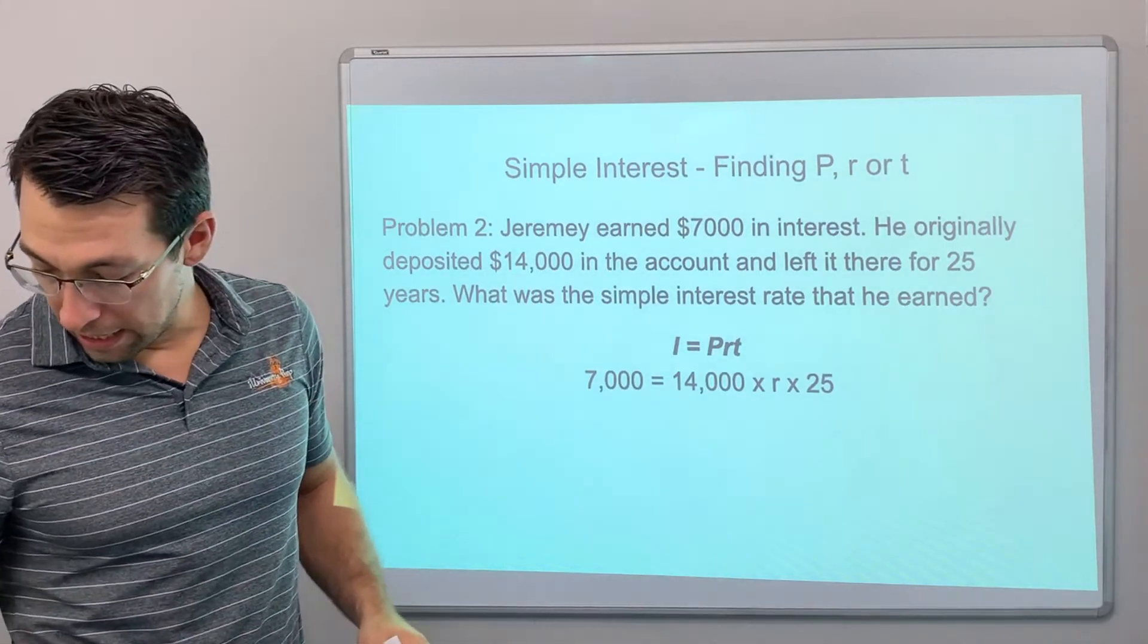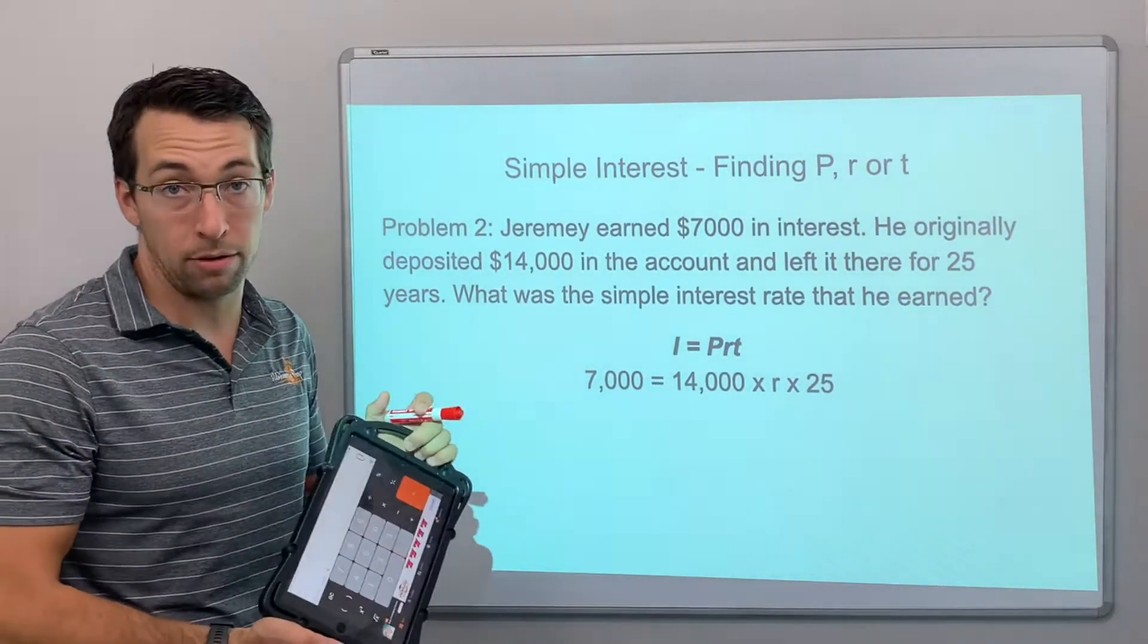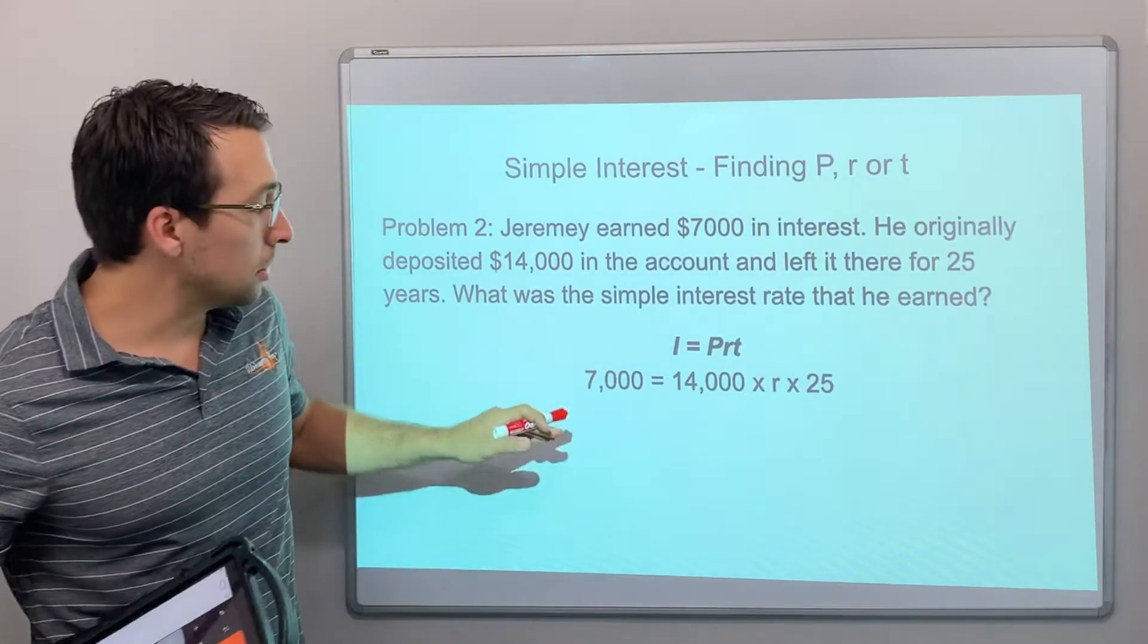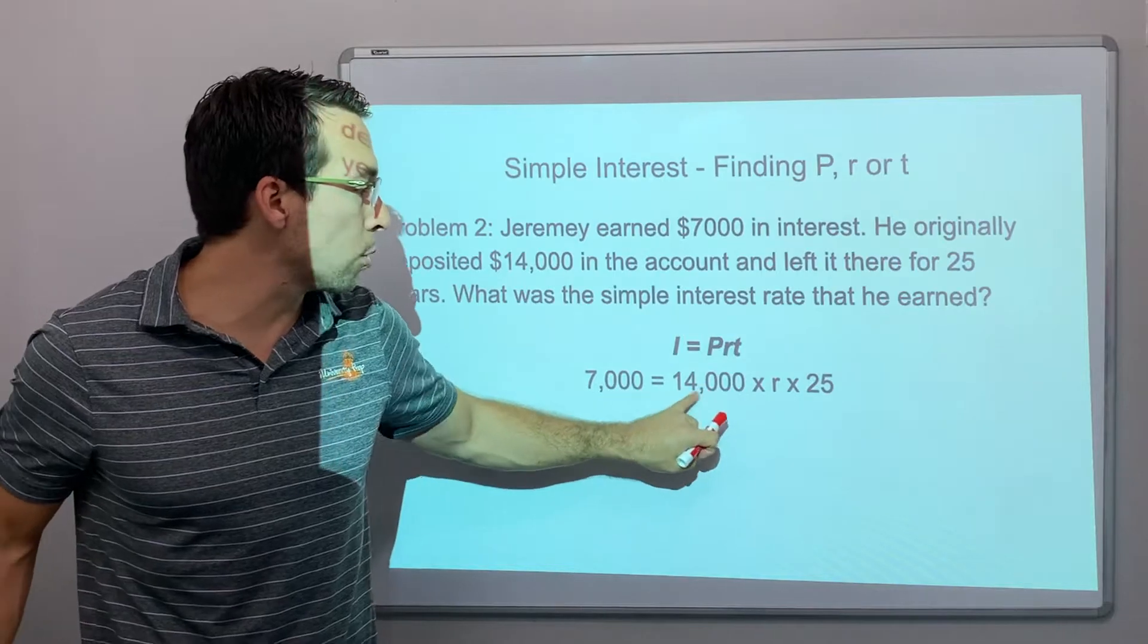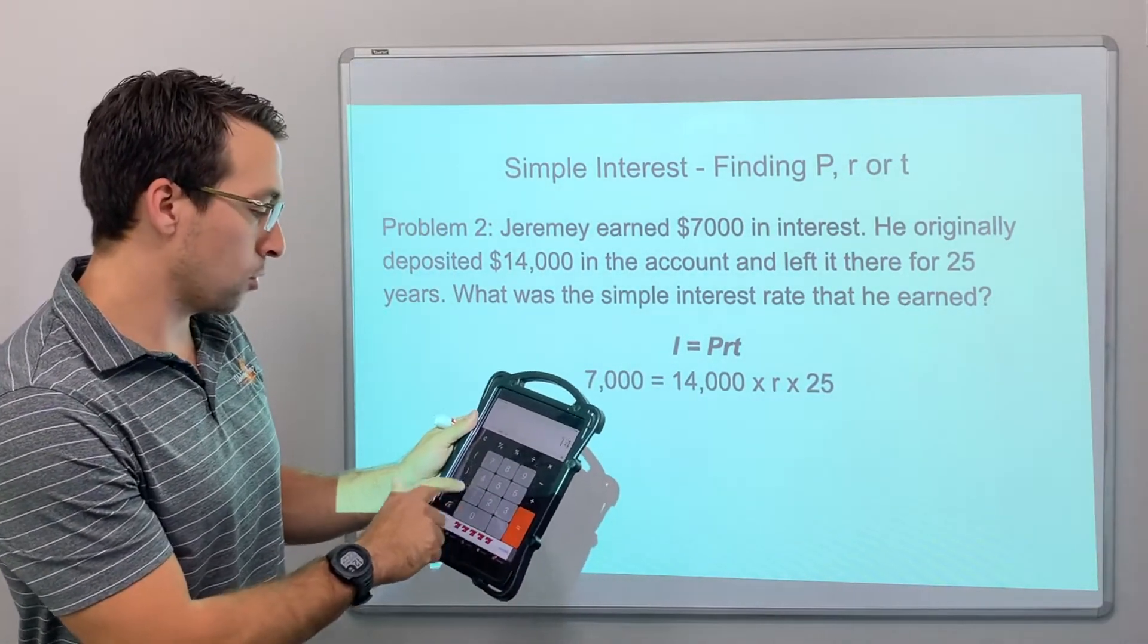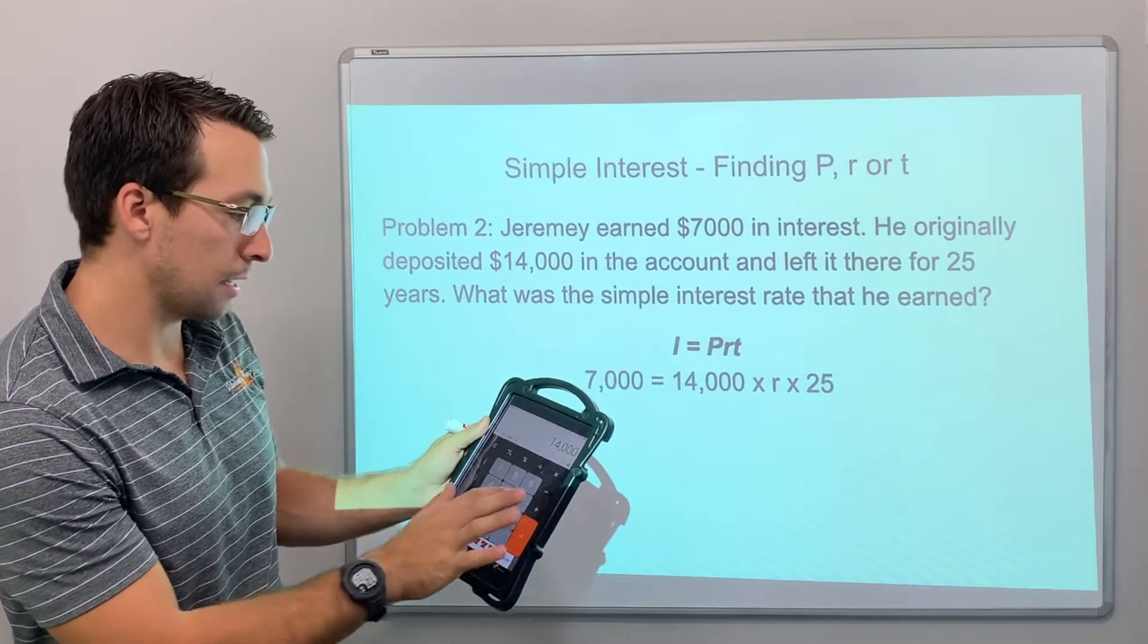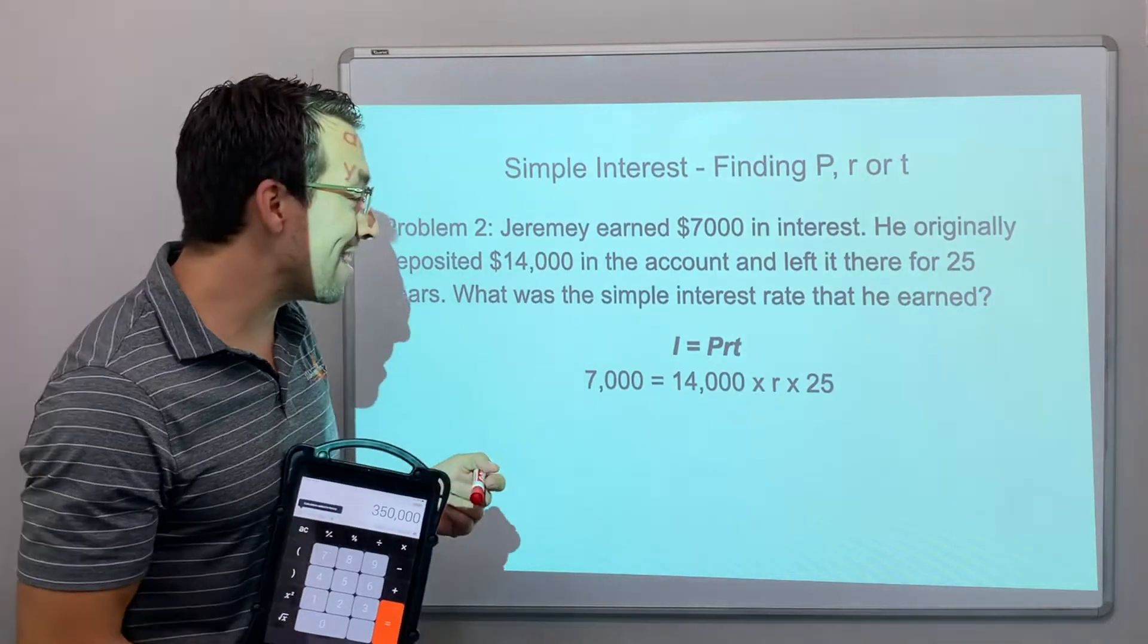Okay, so one thing that is cool is your teacher is now allowing you to use a calculator occasionally, so let's do this. We can multiply these in any order, so let's just do 14,000 times 25. So 14,000 times 25 equals 350,000.